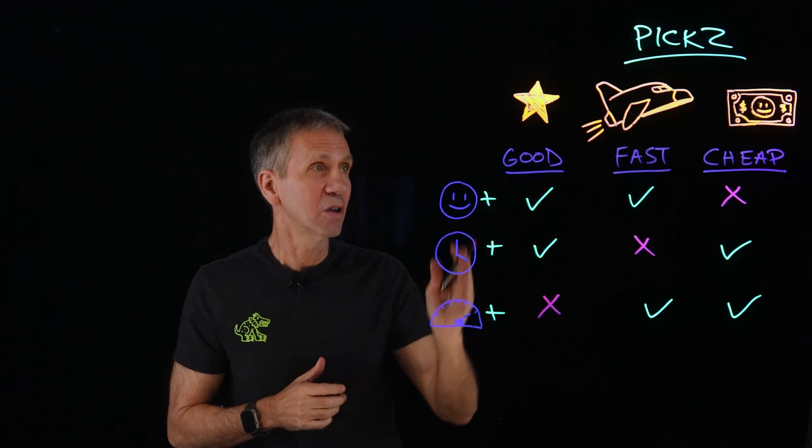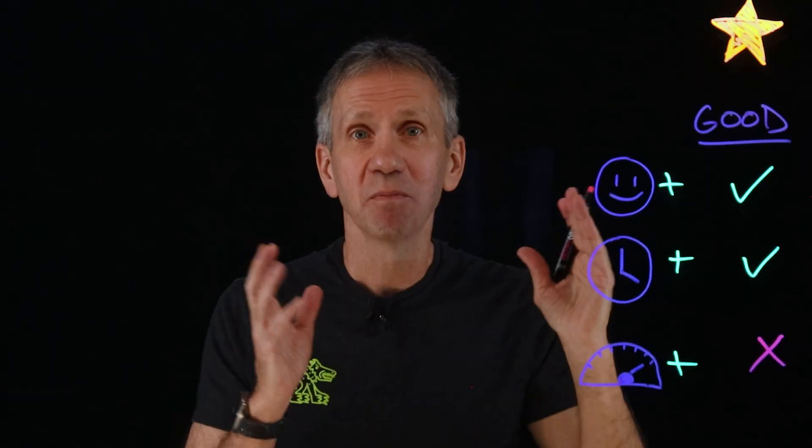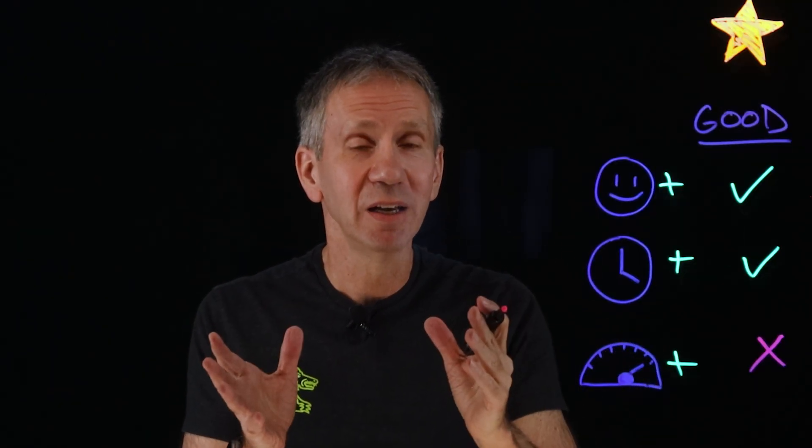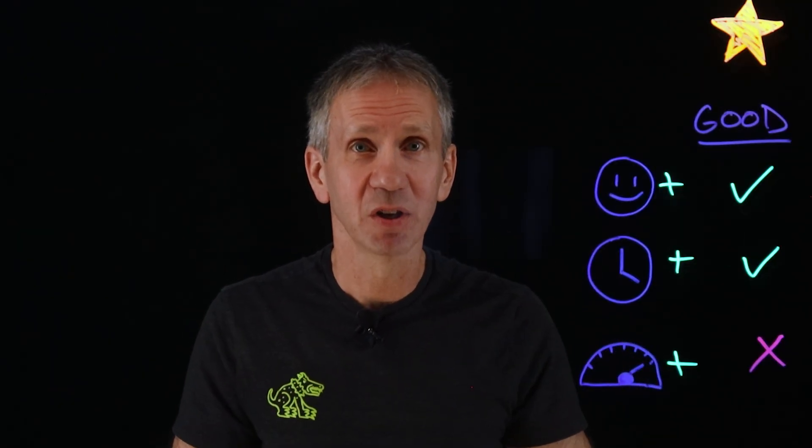You've got three things you can optimize on: good, fast, cheap. But you can only pick two. And that's why I say this is one of the immutable laws of the universe.